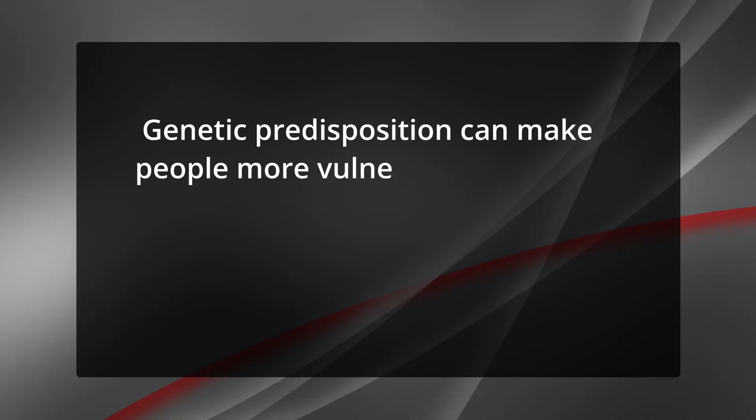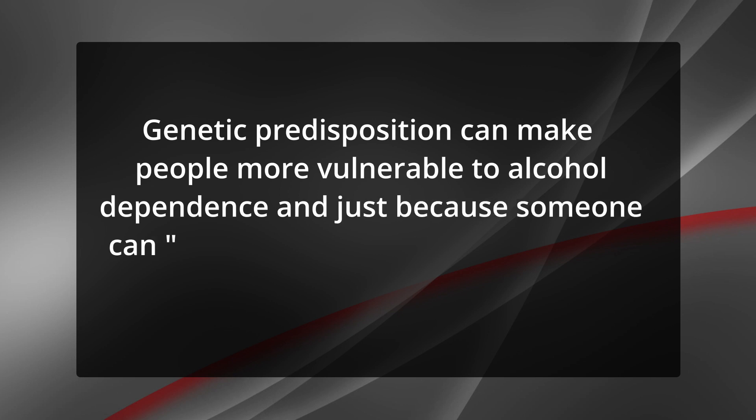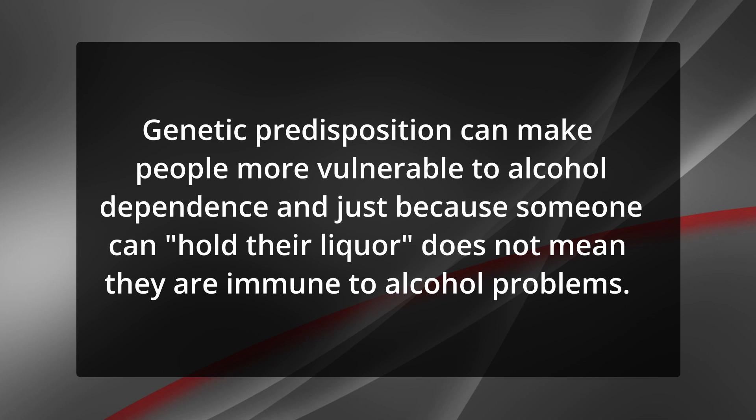Genetic predisposition can make people more vulnerable to alcohol dependence, and just because someone can hold their liquor does not mean they are immune to alcohol problems. Furthermore, just because a family has a history of alcohol problems, it does not mean that their children will automatically develop the same problems. On the other hand, the absence of family drinking problems does not necessarily protect children from developing alcohol problems. Once people start drinking heavily, this can create a cycle which is hard to break, as heavy drinking can cause physiological changes which make it difficult for a person to stop.